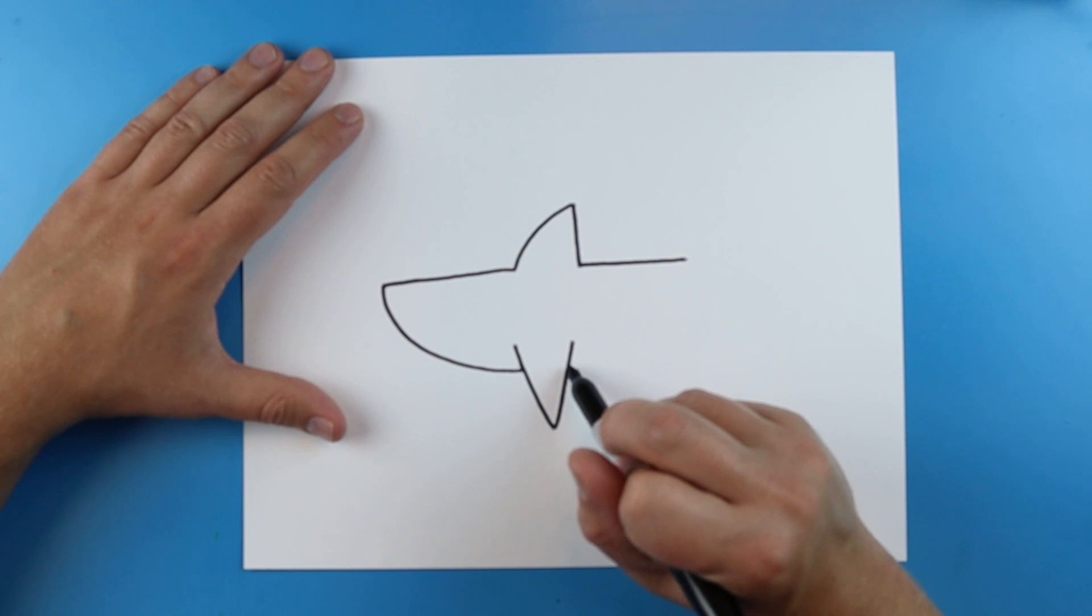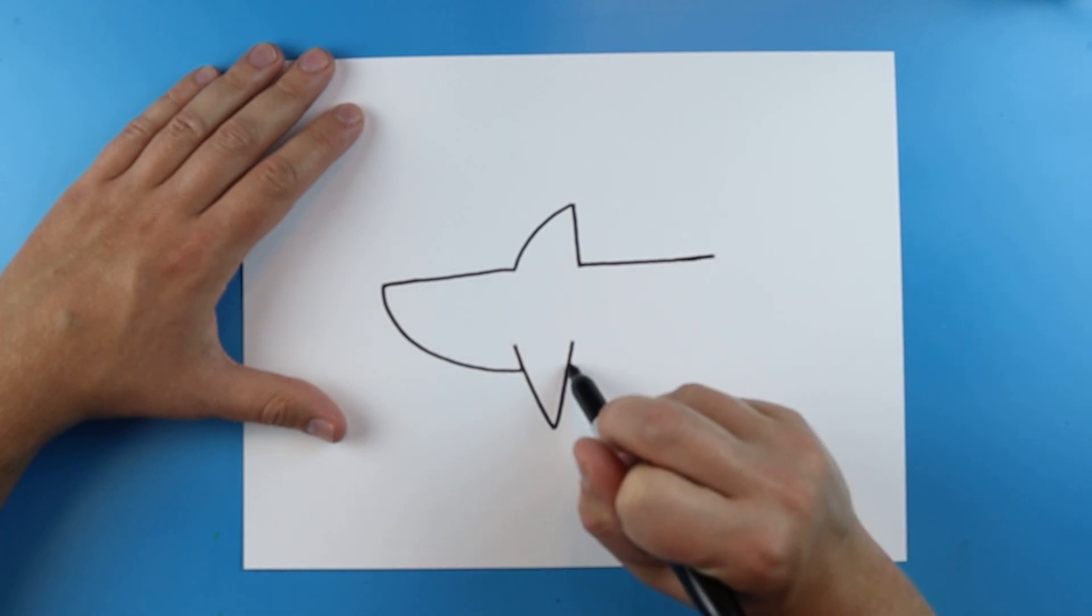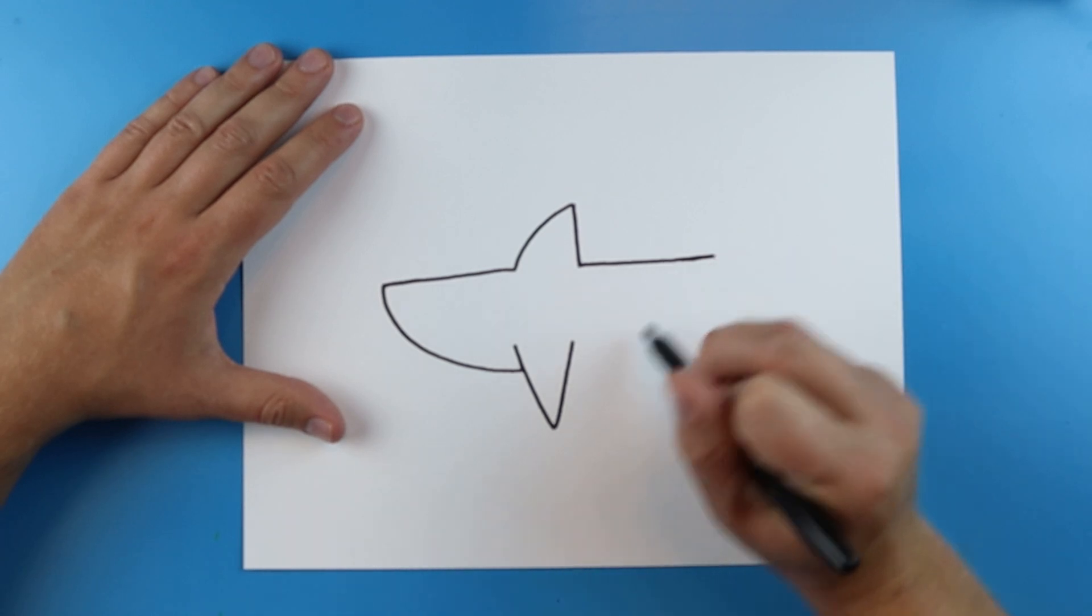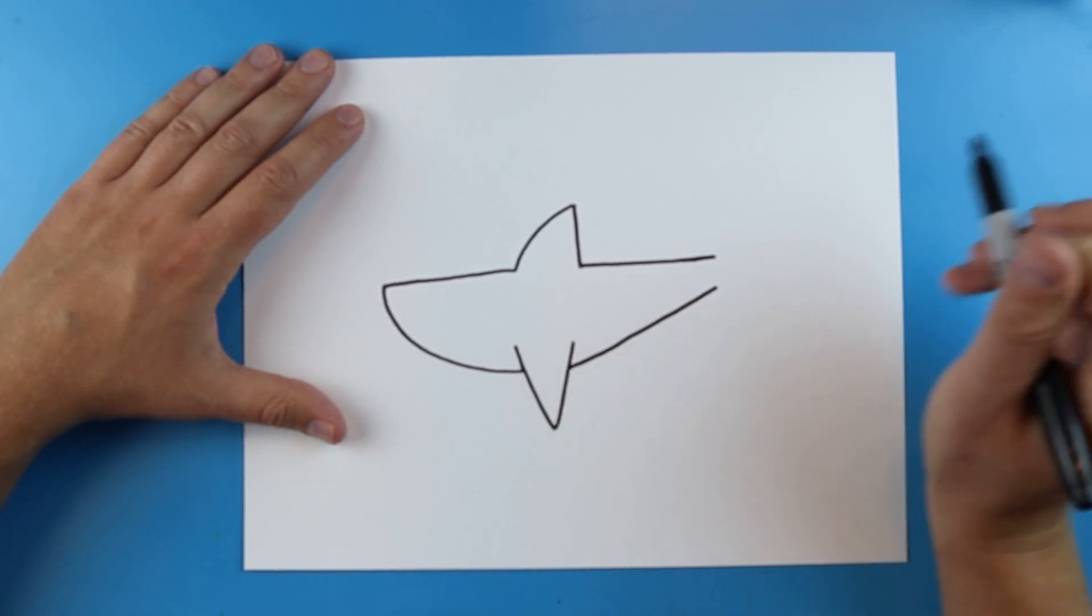Now right here, start right here by your flipper. And you want to draw a line that's going to go right up to this line. I'm going to make this a little longer. So just start here and draw a line that goes up to here and leave some space before you get to this line.